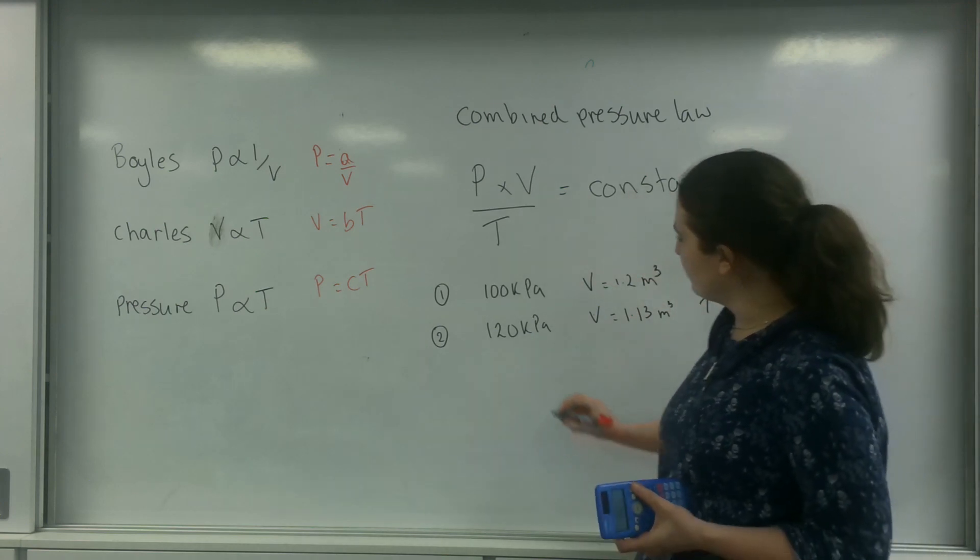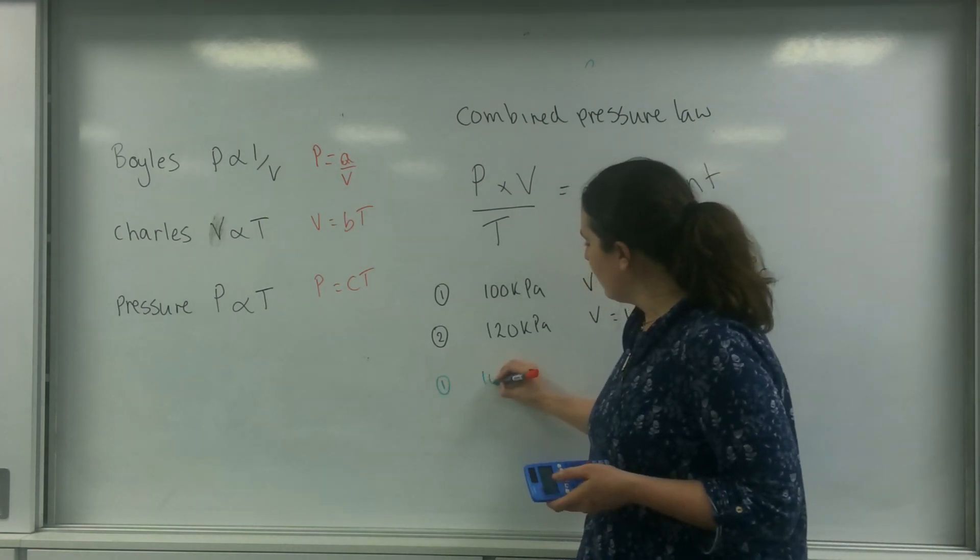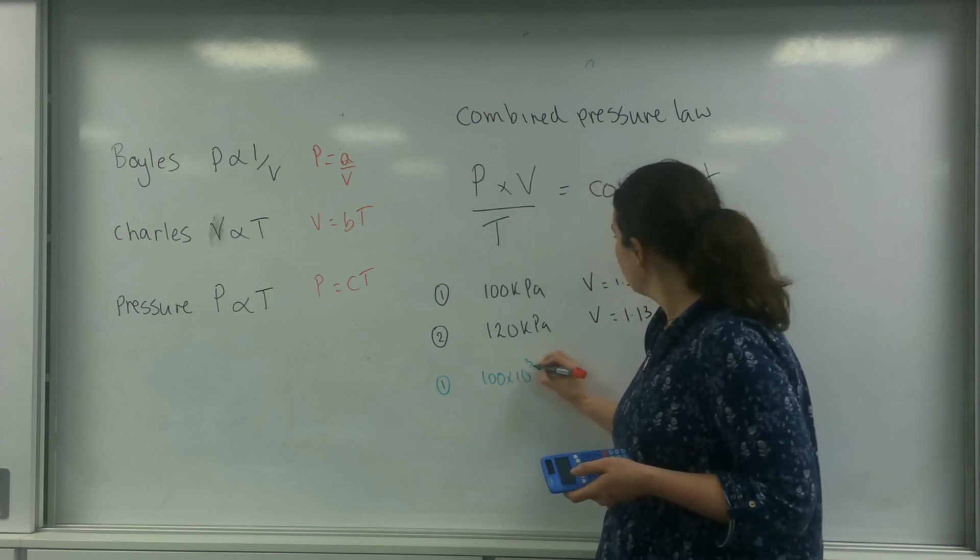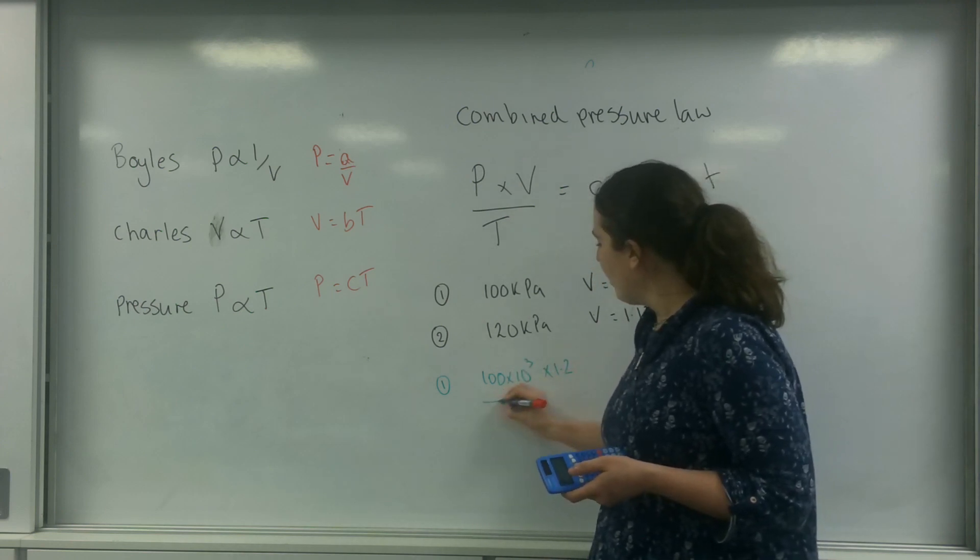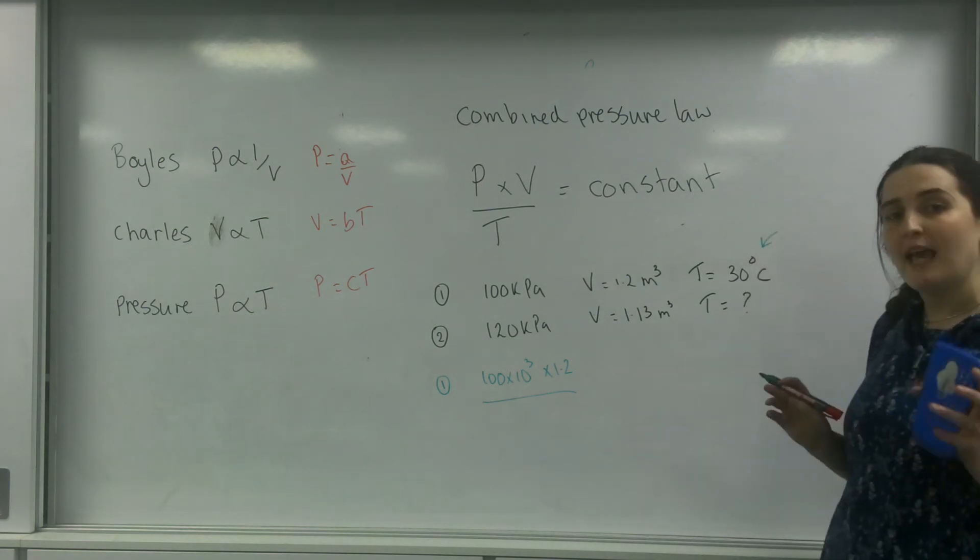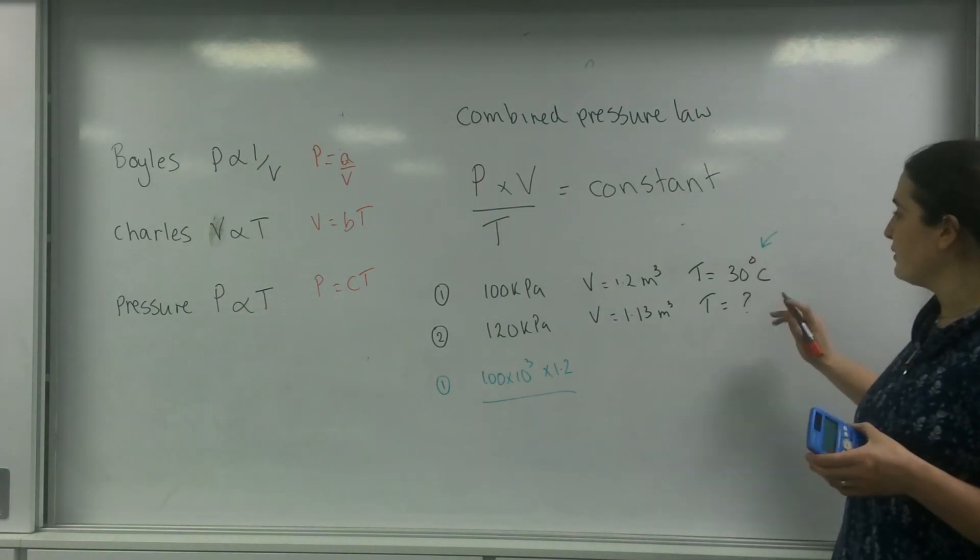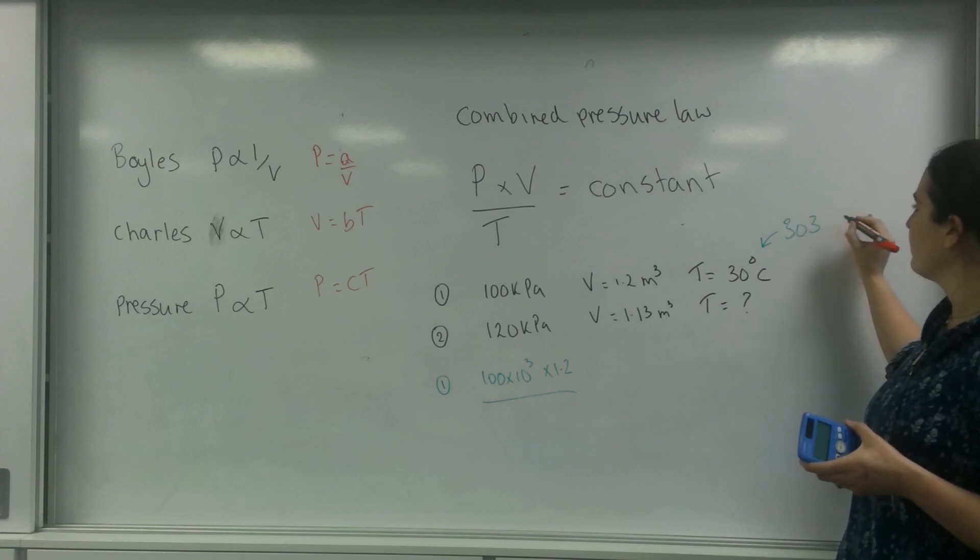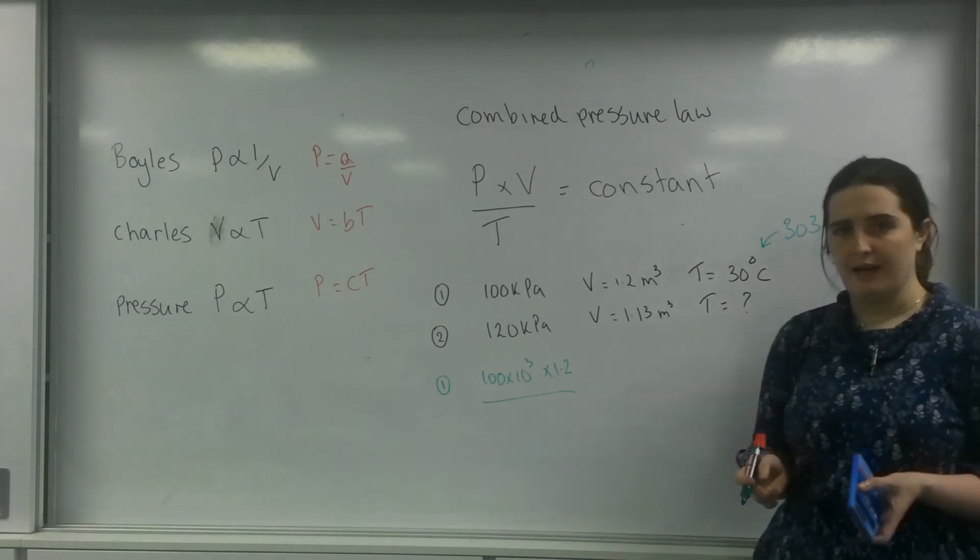So let's work out this constant. For step one, we've got 100 times 10 to the 3 times by 1.2 over... Now remember, I always said about temperature, you must have this in Kelvin. So 30 plus 273 is 303 Kelvin there.